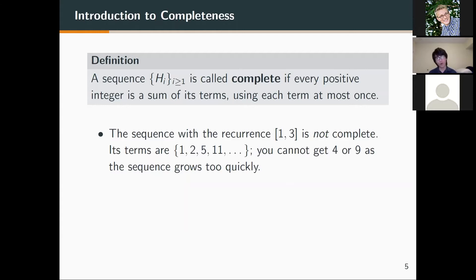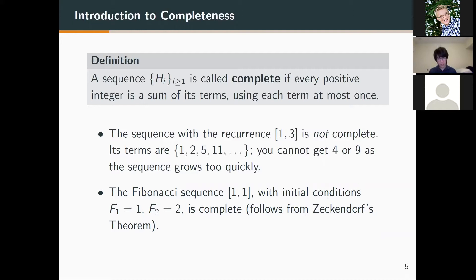On the other hand, the Fibonacci sequence [1, 1] is complete. This follows directly from Zeckendorf's theorem.